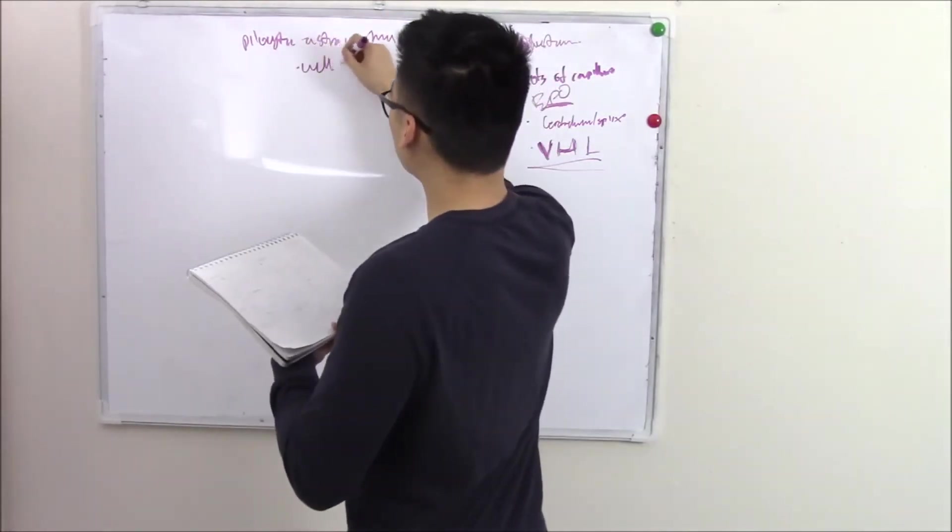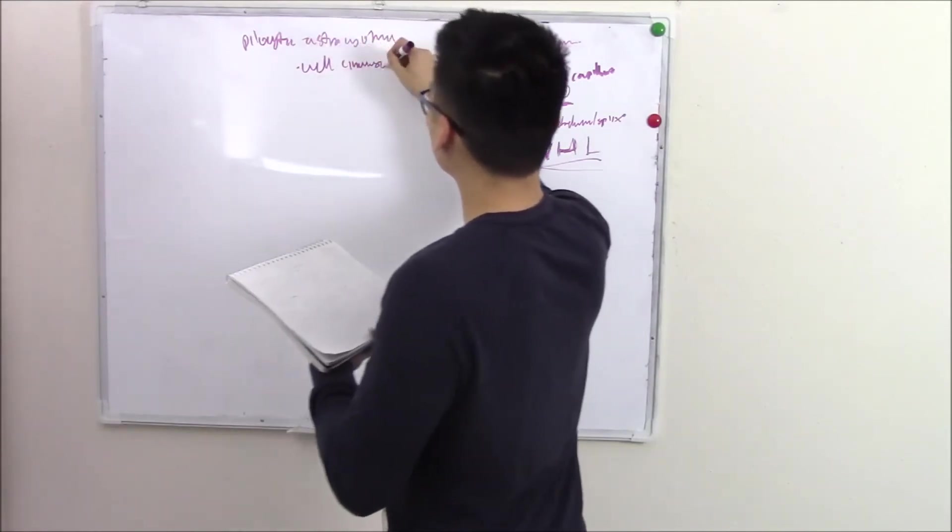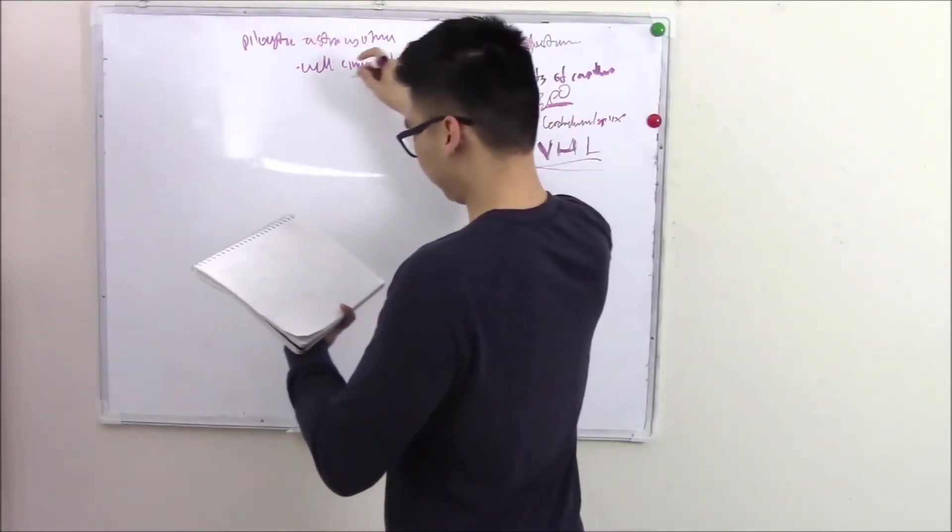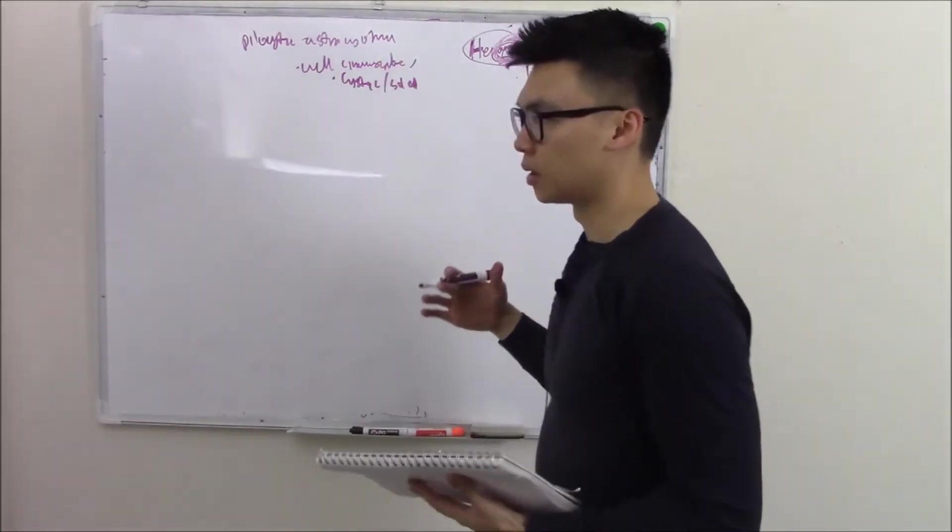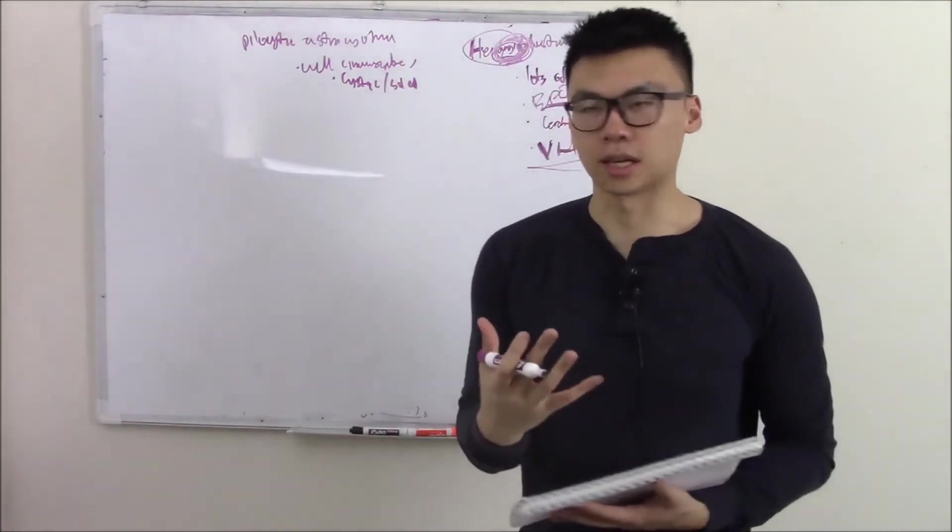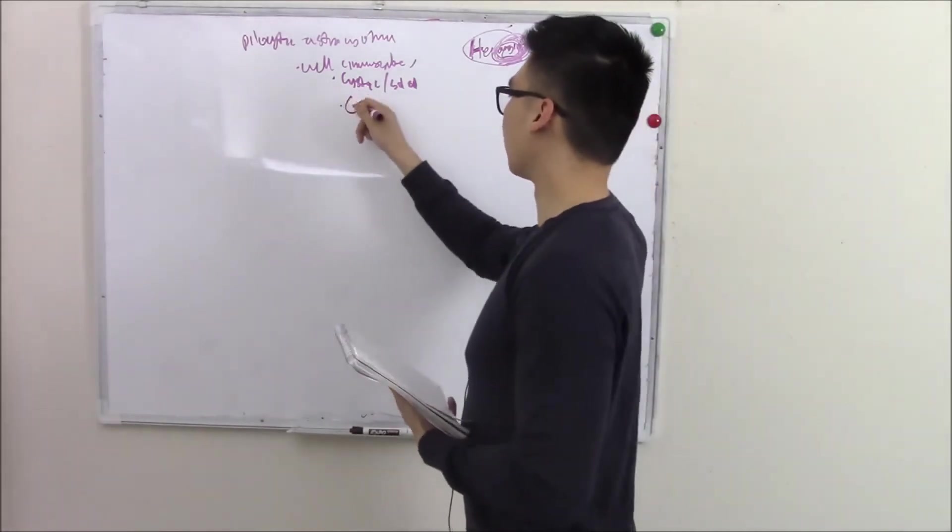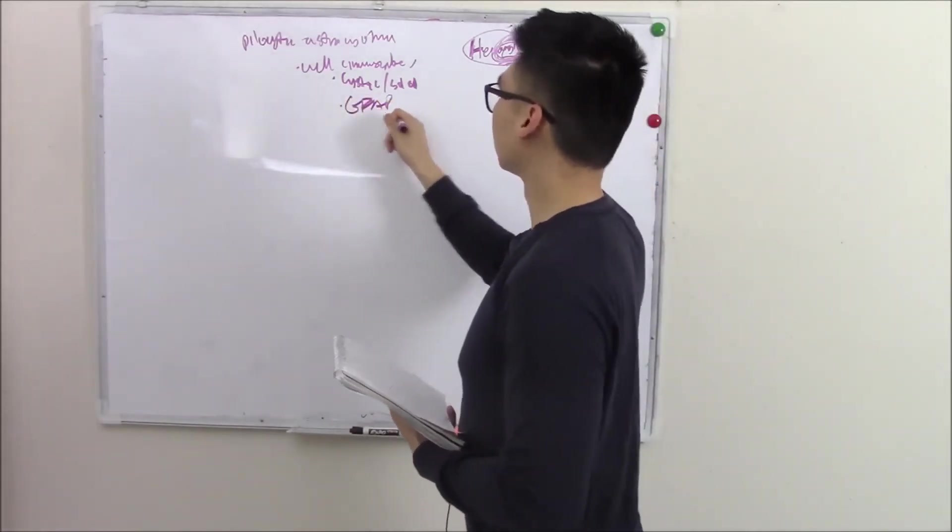It is a well-circumscribed benign lesion. Has cystic and solid components. But you know it's an astrocytoma. How do you know? Astrocytes. Because it's GFAP positive. Easy.